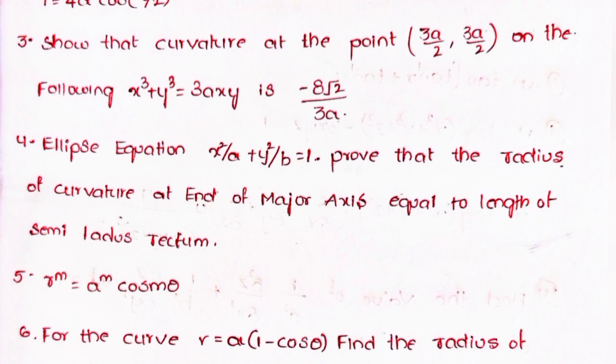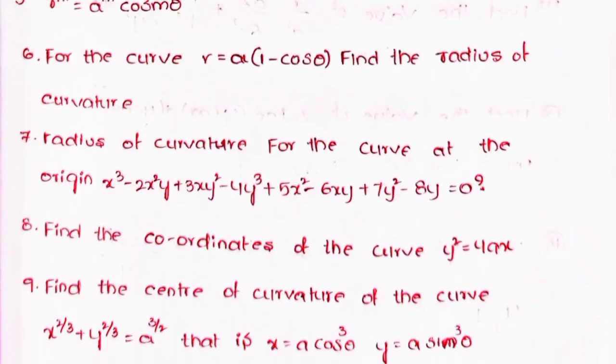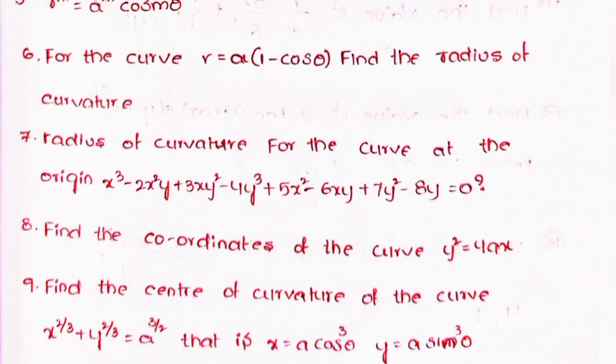Fourth, for the ellipse x²/a + y²/b = 1, prove that the radius of curvature at the end of the major axis equals the length of the semi-latus rectum. Fifth, r^m = a^m·cos(mθ). Sixth, for the curve r = a(1 − cosθ), find the radius of curvature.